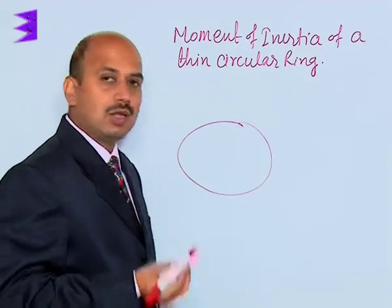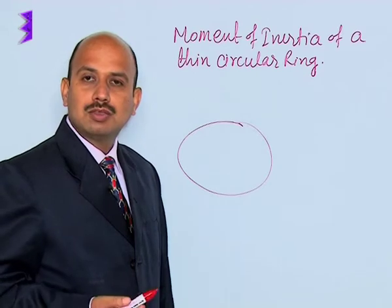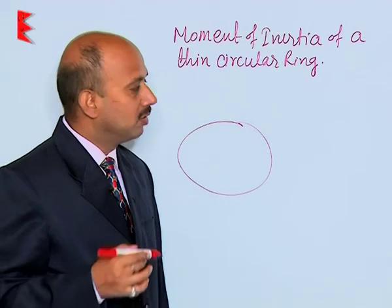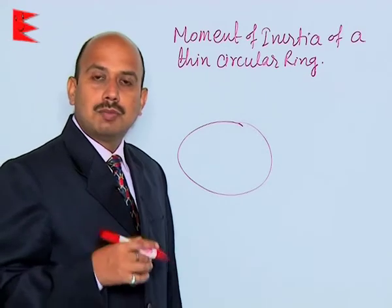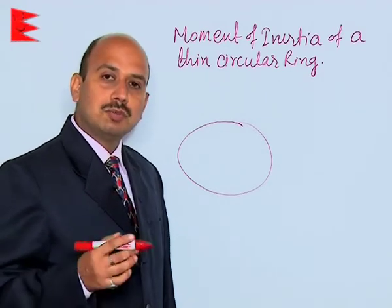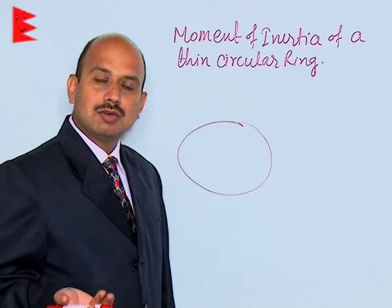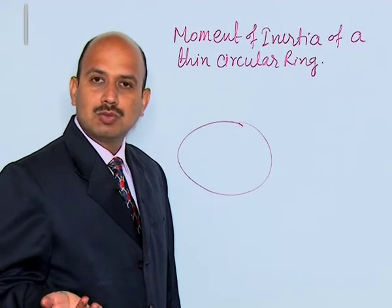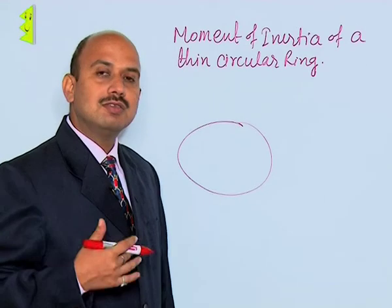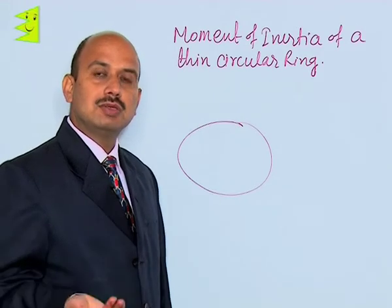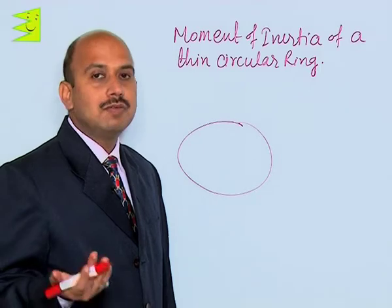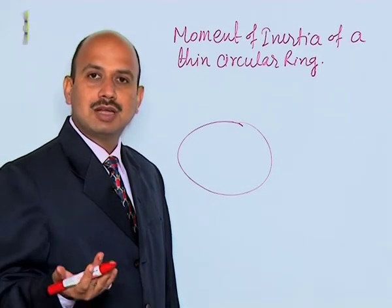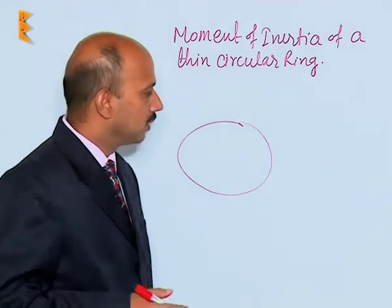We cannot directly calculate I = mr² because that formula applies when the body consists of discrete particles. If the masses are uniformly distributed, then we have to use another concept — that is the concept of summation, which is integration.